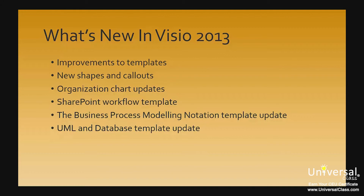New shapes, callouts and containers have been added. The organization chart template has new shapes and styles, and it's now easy to add pictures to employee shapes all at once. The SharePoint workflow template supports stages, loops and steps as well as custom actions. The Business Process Modeling Notation (BPMN) template now supports BPMN version 2.0. UML and database templates are now easier to use and more flexible.